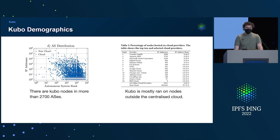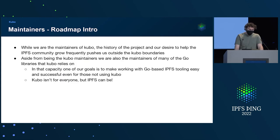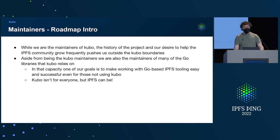Kubo is in a lot of places and lots of autonomous systems. There are a lot of people running things in clouds and a lot of people running them at home. Many of the Kubo maintainers, for somewhat historical reasons, also maintain many of the IPFS libraries written in Go that Kubo and other projects rely on. We try to balance our work between making Kubo better and making the tooling better for the rest of the community and other implementations.